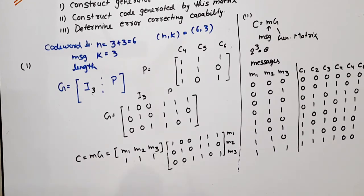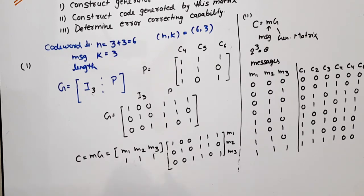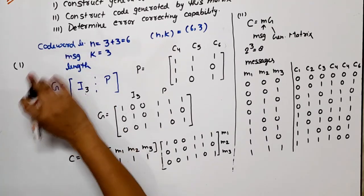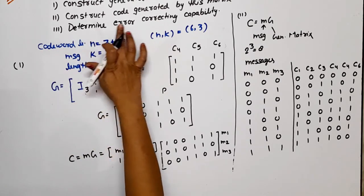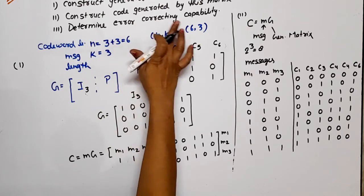This is the complete code. You can do bit-by-bit multiplication, and the easiest way is: wherever your bit is 1, take that row and XOR it with the others. Now the third part is to determine the error correcting capability.